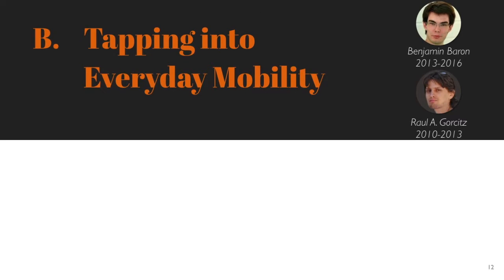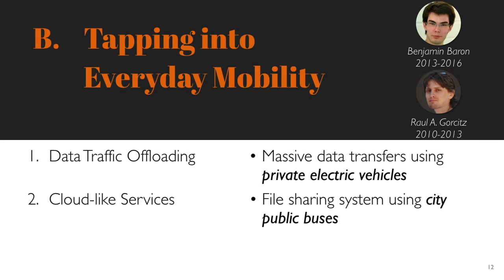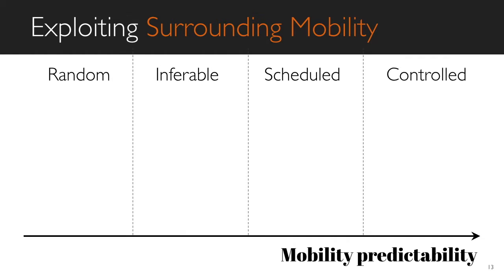I will now present the second part of this presentation. This second part consists of three pieces of work conducted with two PhD students: Raoul Gorsets and Benjamin Barron. All three works take advantage of the everyday mobility of vehicles such as electric cars or public buses operating in cities. We can classify vehicle mobility according to the knowledge regarding the structure of their mobility. A first class is the controlled mobility of vehicles such as UPS or FedEx trucks, where trips are calculated in advance for the purpose of delivering parcels.